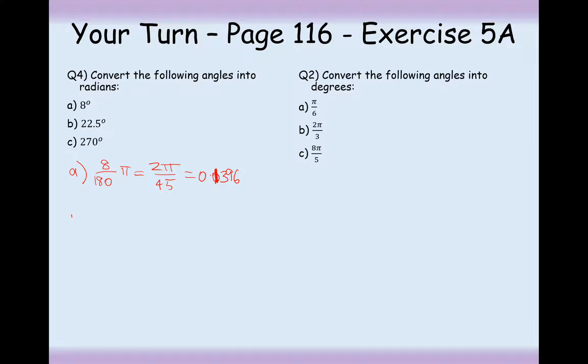This would also be equal to 0.1396 when written in decimal form. Sometimes you will have them written in decimal form. 22.5, well hang on, I almost know 22.5. I know that π by 4 is 45 degrees, so I need to then half that. So π by 8 is my answer for part B.